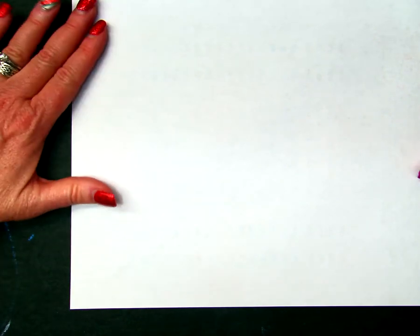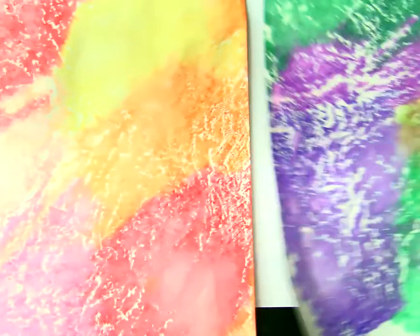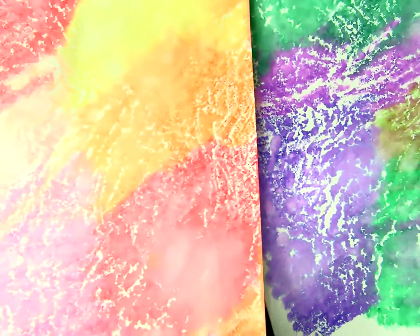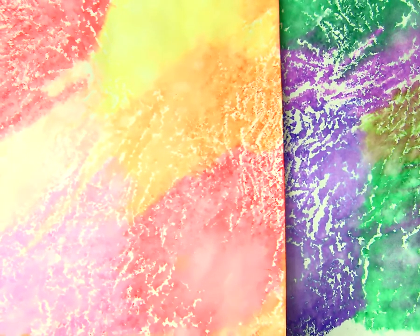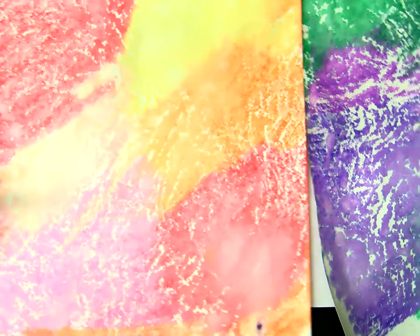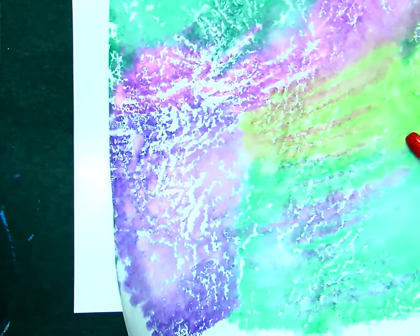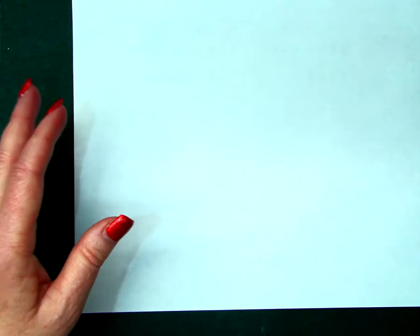Welcome back, first graders. Today in this session we're going to finish our Frankenthaler abstract flowers. We're going to use the paper that we made earlier with the warm colors and the cool colors, and we're going to draw on the back side of these.